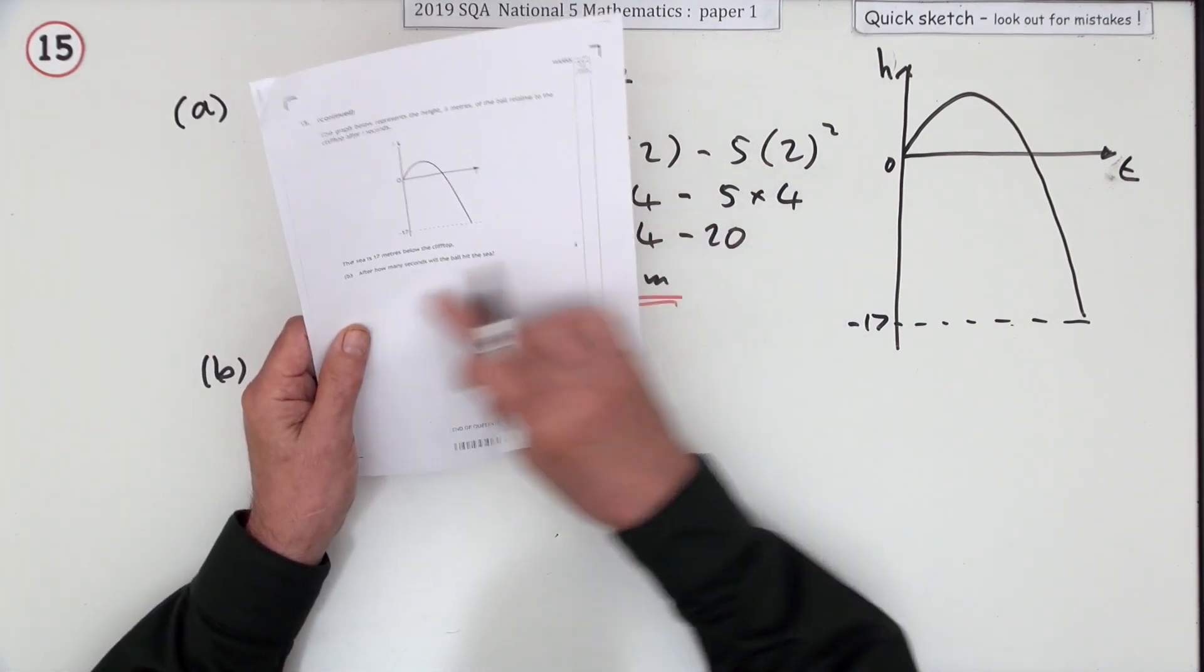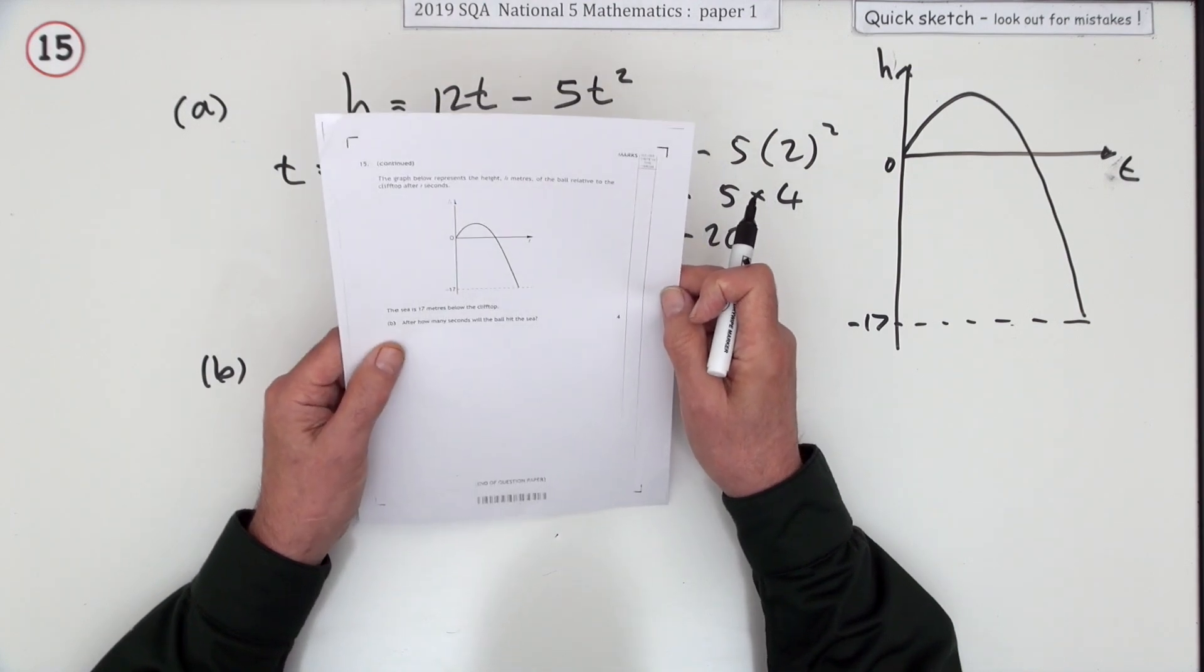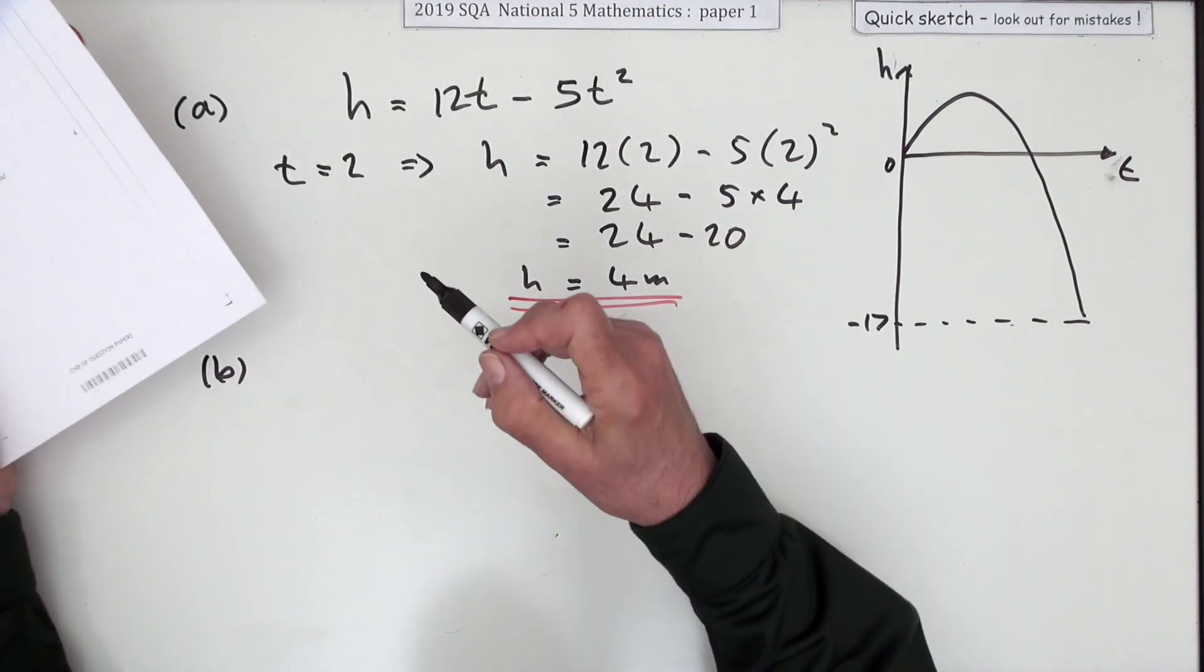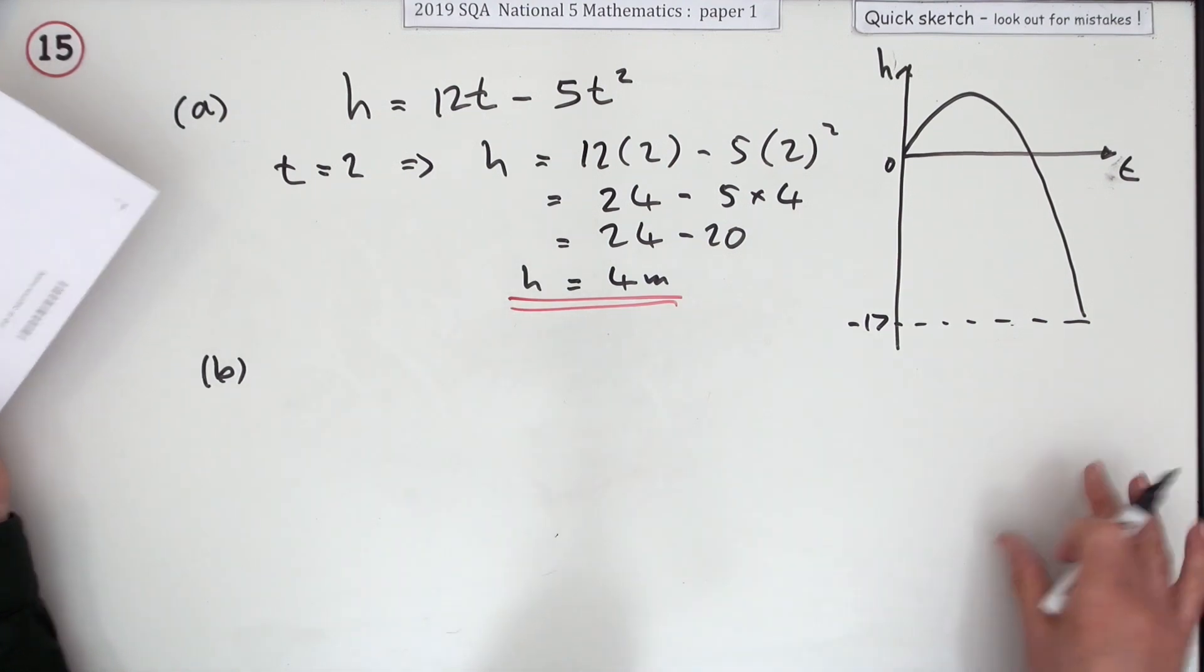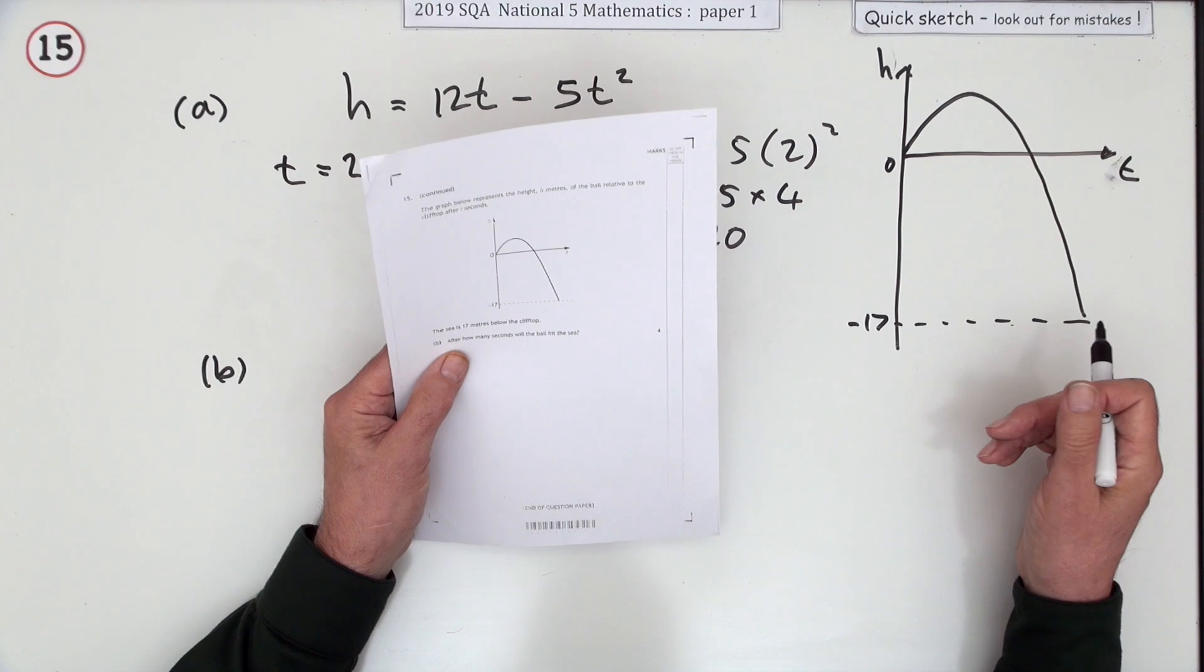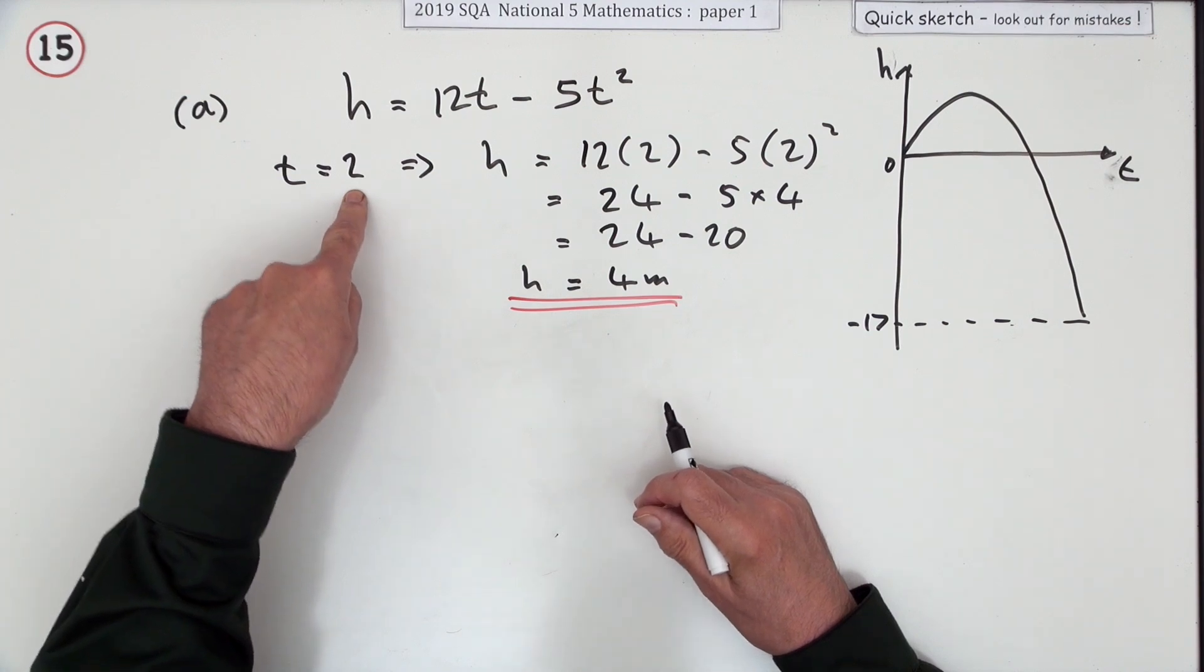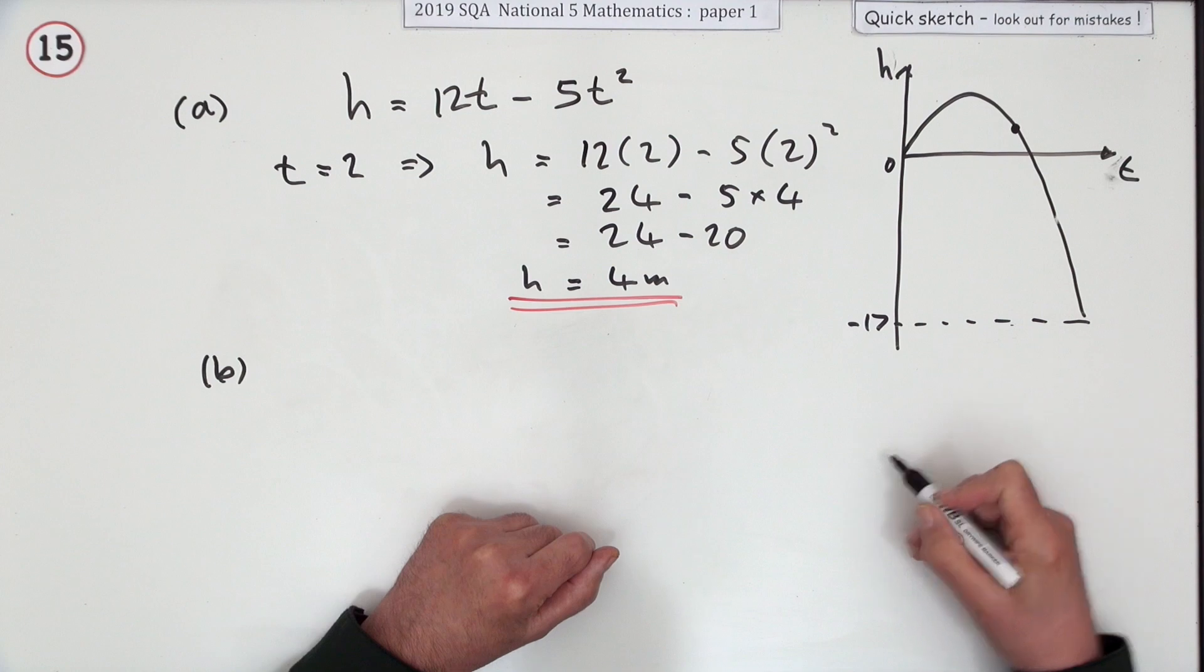Now, after how many seconds - doesn't say how long will it take from kicking. There's a little bit of ambiguity, it's like that last question with the walker. The wording here, after how many seconds will the ball hit the sea, it's just the way that's been worded. Does that mean after these two seconds? Again, it's just a case I'll just cover myself at the end, because immediately you just think well how long does it take to hit the sea, but it doesn't say how long does it take, it says after how many seconds.